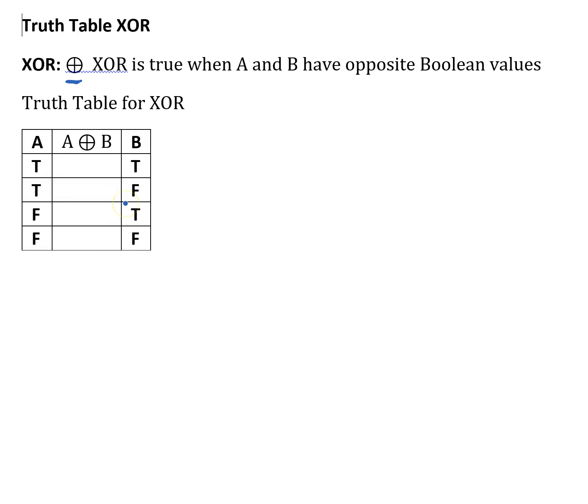So then we analyze those two columns and determine when XOR is true. XOR is true when A and B have opposite Boolean values. If I look at the first row, true, true, those are the same Boolean values. So A XOR B is false there.